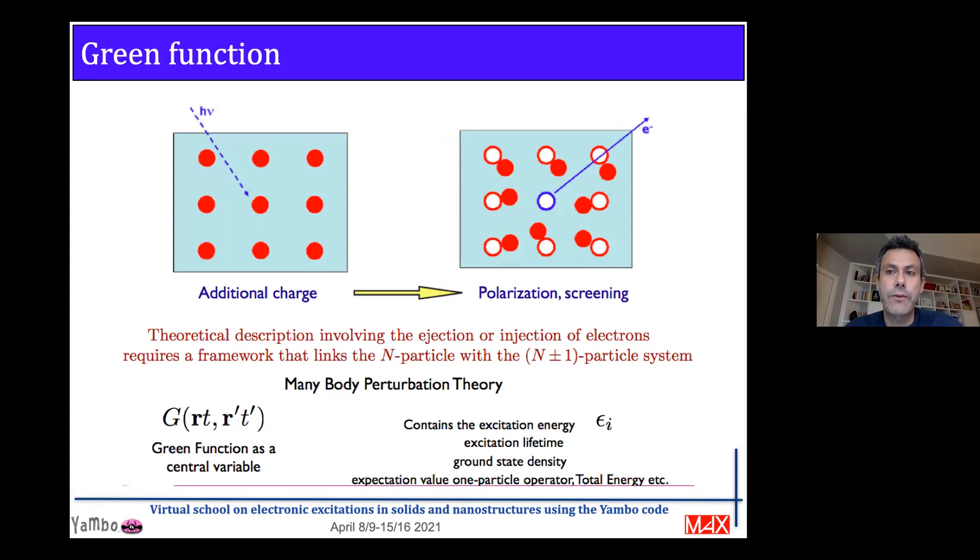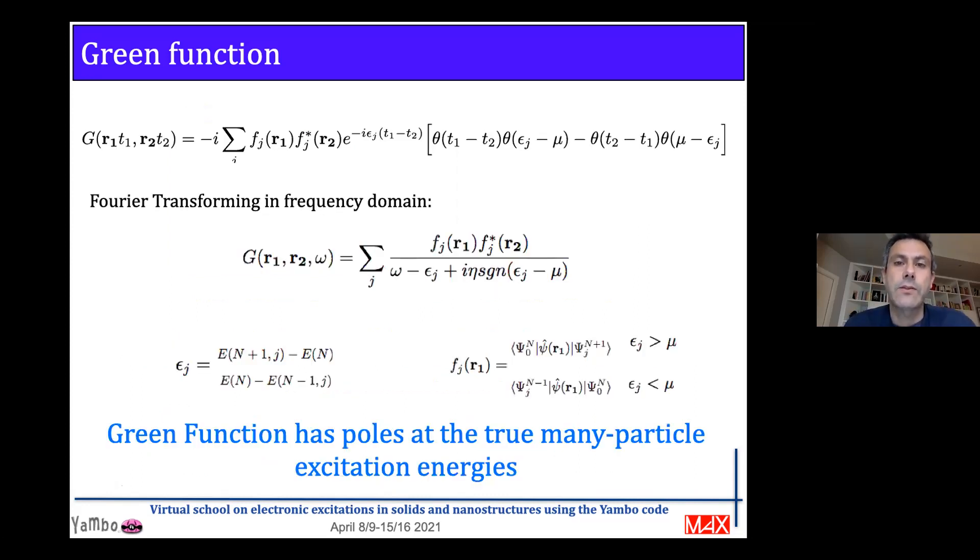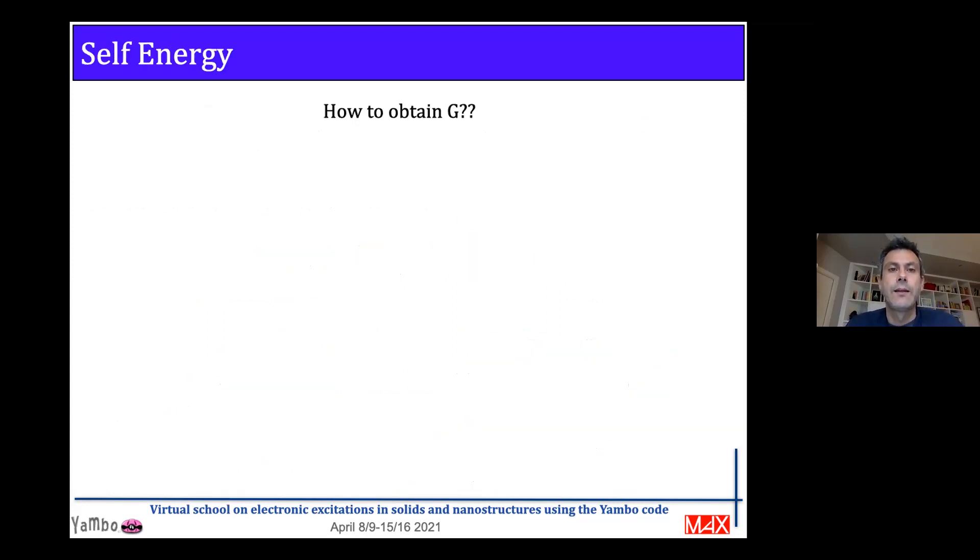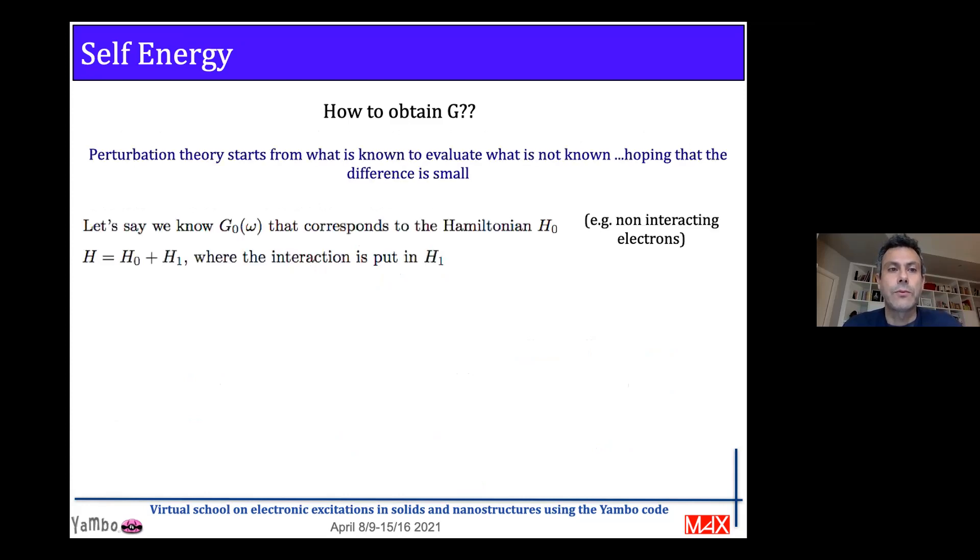We need a theory that can link exactly the n particle system and n plus or minus one particle system. This is many-body perturbation theory, and the quantity we want to look at is the Green function. The Green function contains the exact excitation energy. Besides other quantities, observable excitation lifetime, ground state density, and in general expectation values of one particle operators including total energy. We have seen already how the Green function is defined. And the Green function by Fourier transform, we can recognize that the poles are the true many-particle excitation energies we are looking at. So how to obtain this Green function practically? This is the problem we want to look at.